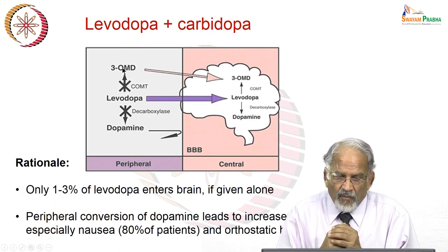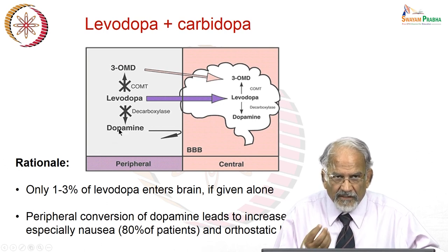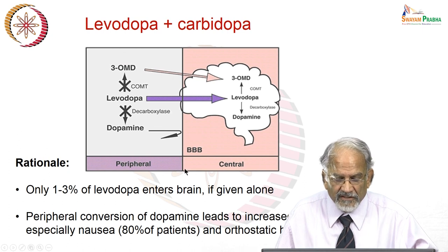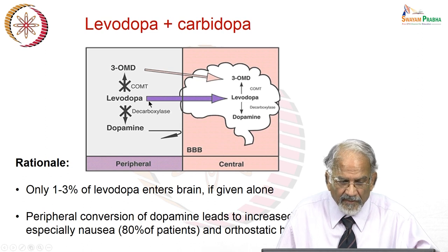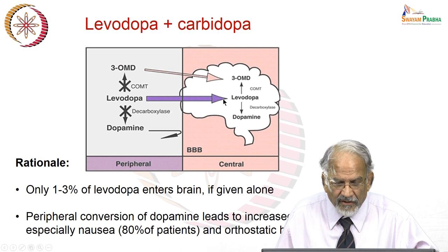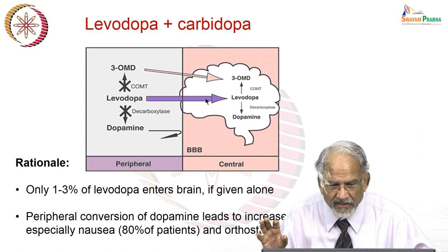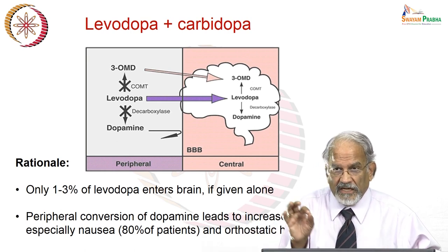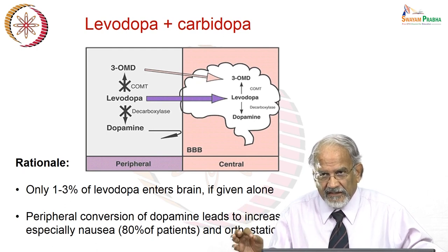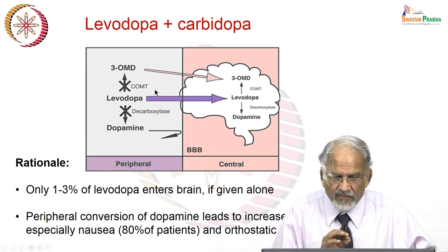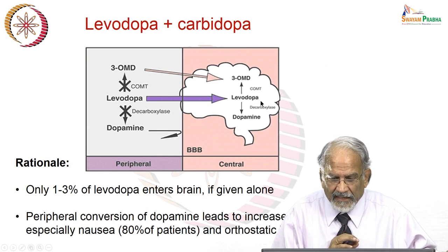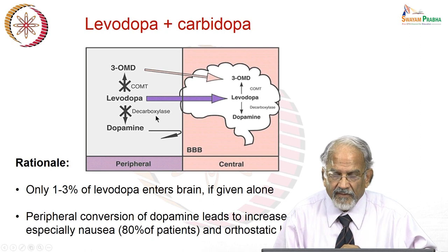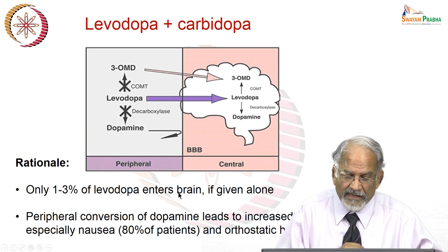When dopamine is given peripherally — by injection or oral — it does not enter the brain due to the blood-brain barrier. What you give is levodopa, and this crosses into the brain — but only about 1 to 3% of levodopa enters the brain if given alone. Of this, only a fraction reaches the substantia nigra. Therefore, the availability of dopamine at the site of action is very small. The large amount of levodopa converted to dopamine in the periphery causes side effects, and less reaches the brain.